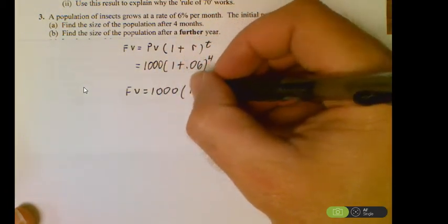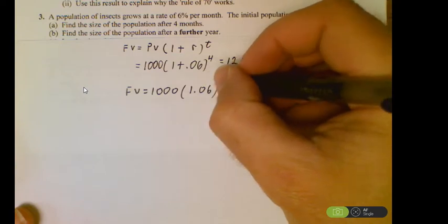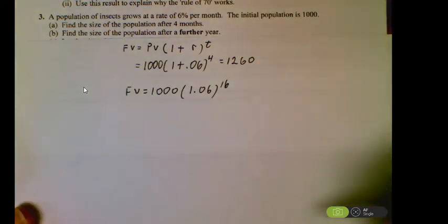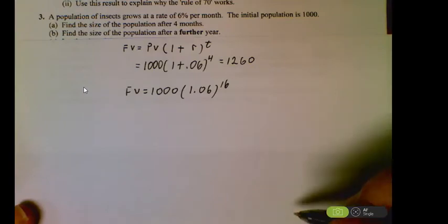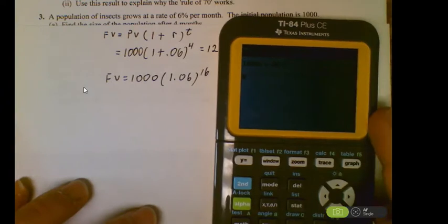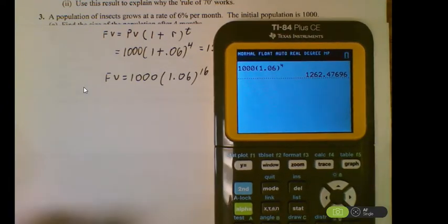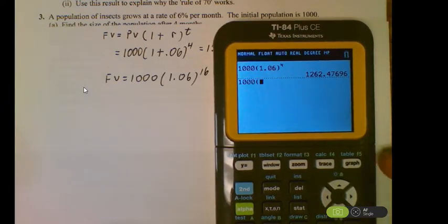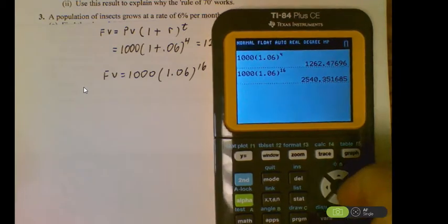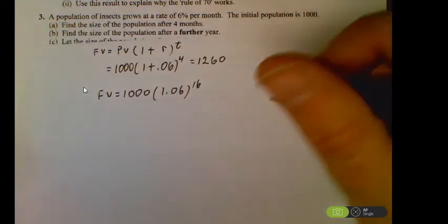I got 1 plus the rate, and I would use a power of 16 because it was 4 months plus a further 12 months. So throwing that into the calculator, we have our new population. 2540 would be a safe answer, rounded to 3 sig figs. That's the one I would go with since the directions don't say otherwise.